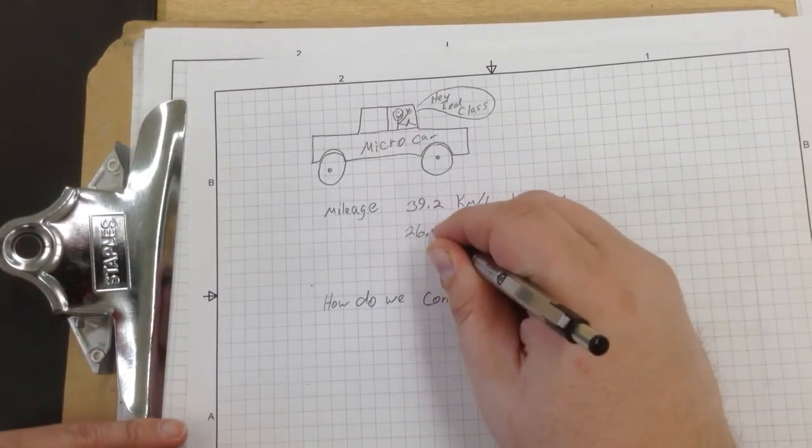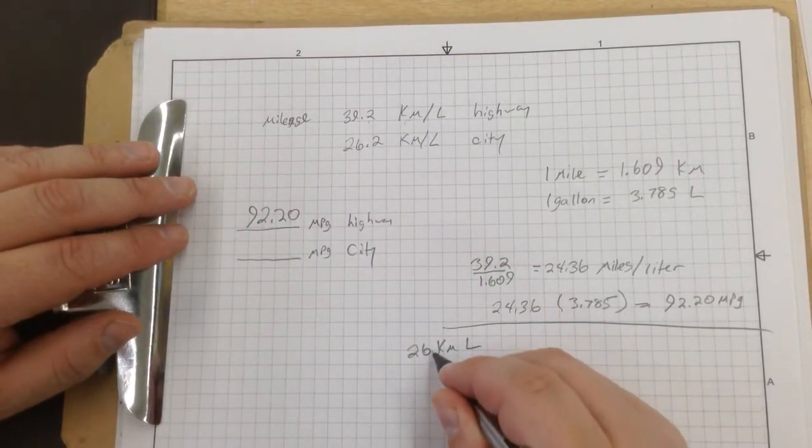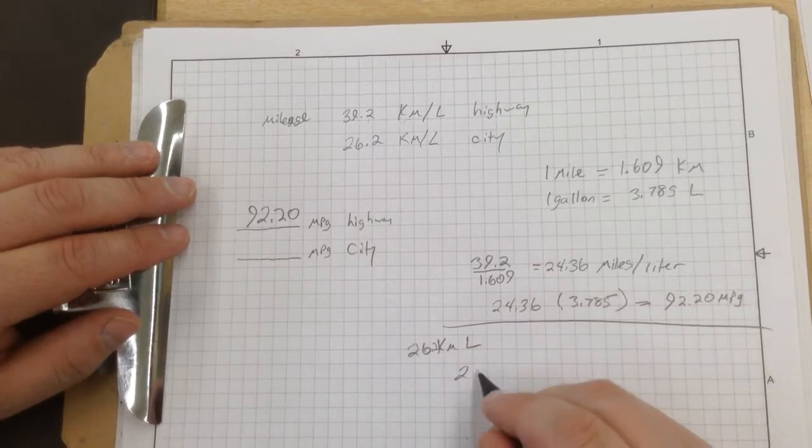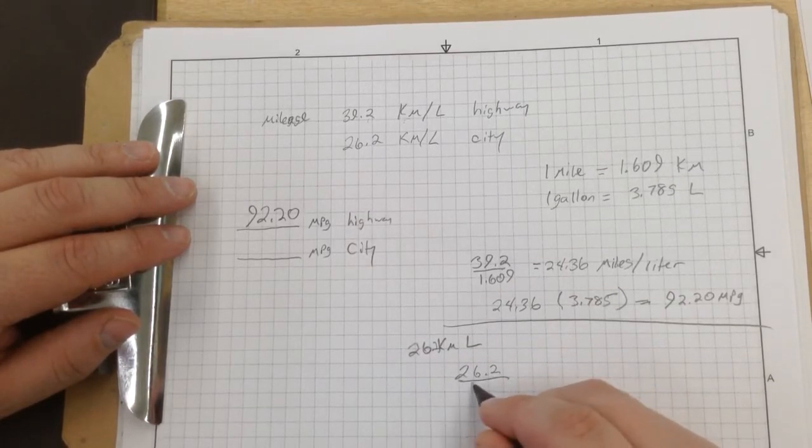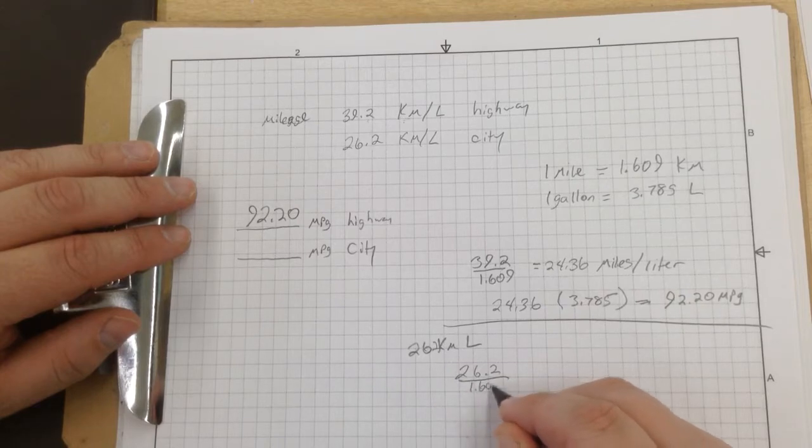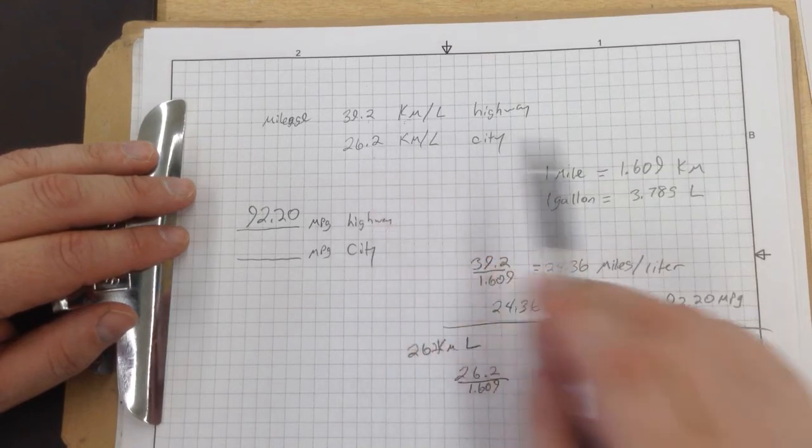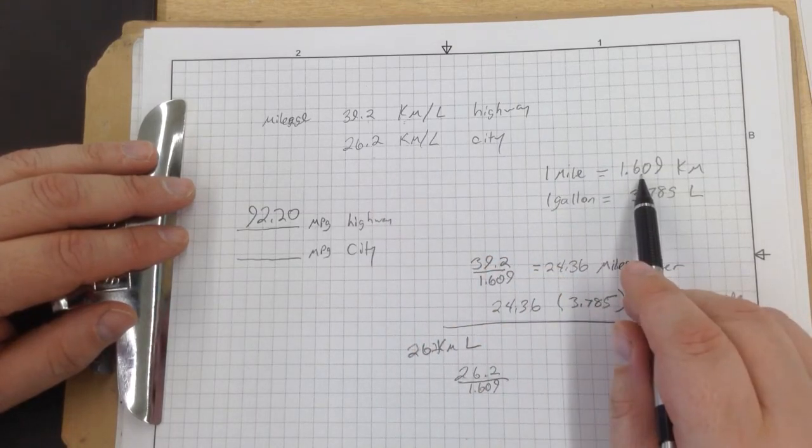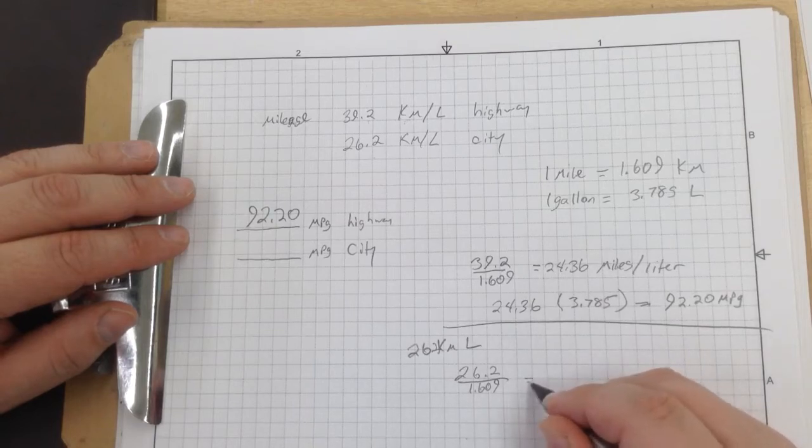26.2 divided by 1.609. Remember, we're doing the same thing. 26.2 divided by 1.609, that's going to switch kilometers to miles. When we do this, that gives us 16.2 miles per liter.